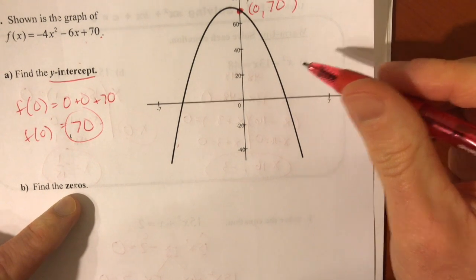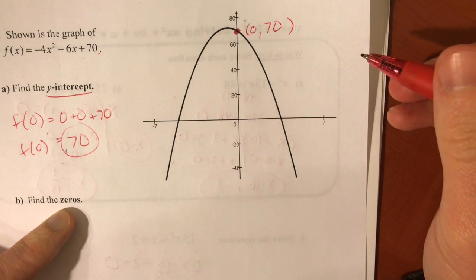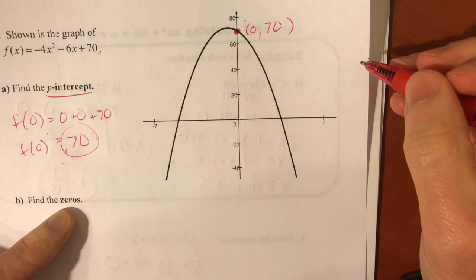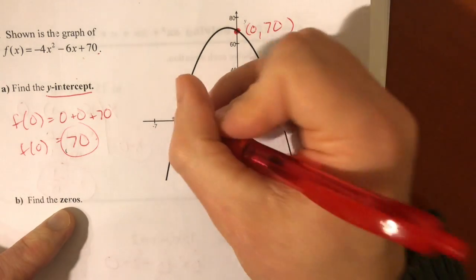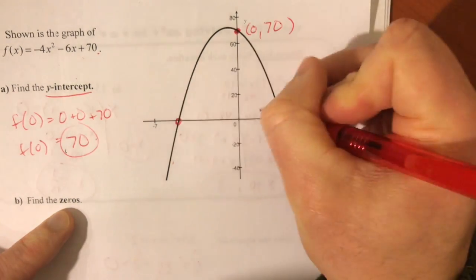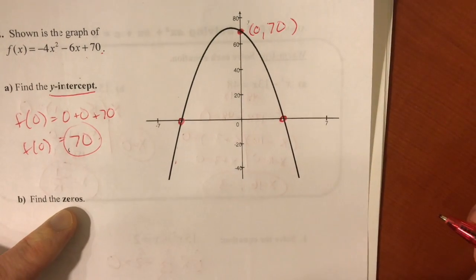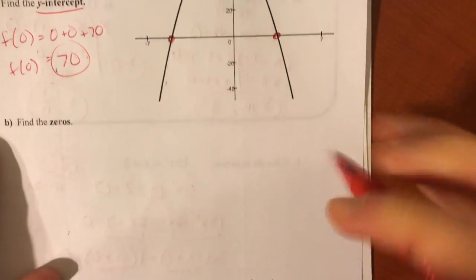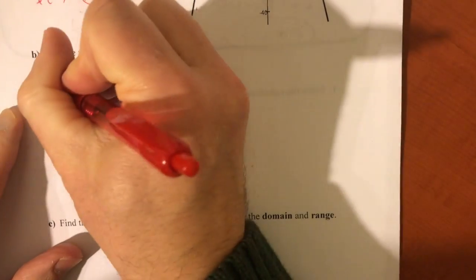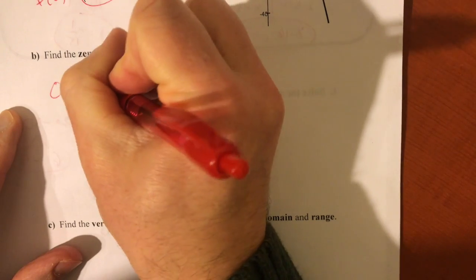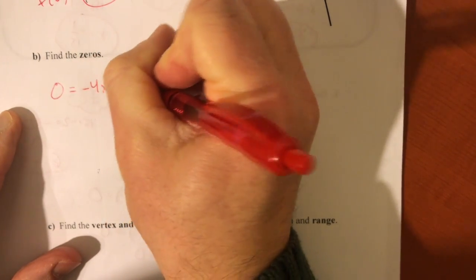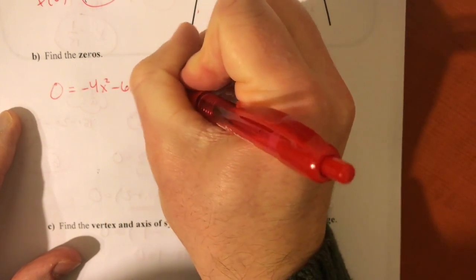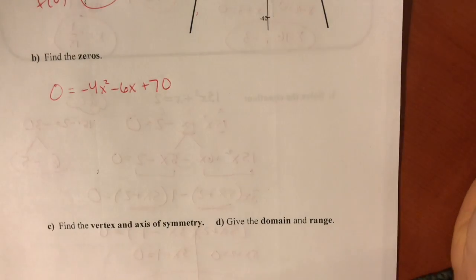Finding the zeros. Zeros are another word for x-intercepts or the roots of the equation. And we can see there are two places where we hit the x-axis. And that means we put in 0 for y. Or in other words, setting the entire equation equal to 0.